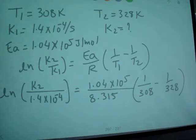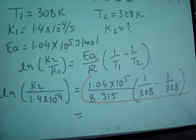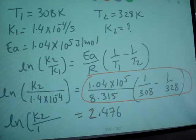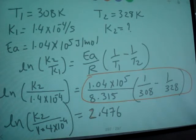Now, when you calculate this whole amount, when you calculate this whole thing together, you get 2.476 and LN K2 divided by 1.4 times 10 to negative 4. Now, when you separate LN, you can take Ea raise to, so you get,